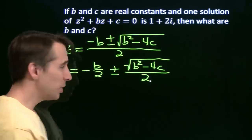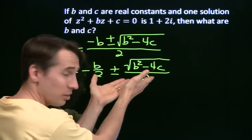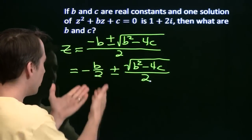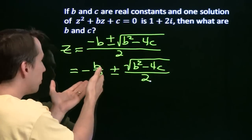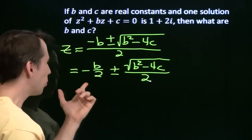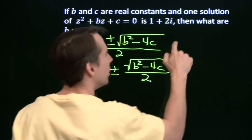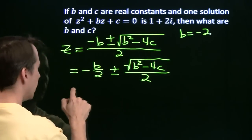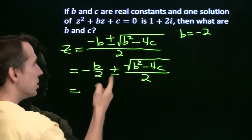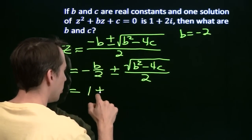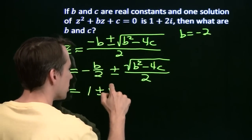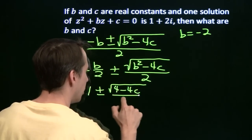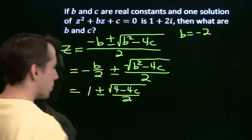which means the imaginary bit has to come out of this right here. That tells us our discriminant is negative. And the real part has to come out to be 1, so we know right away that b is negative 2, and now we see that our roots are 1 plus or minus this mess right here.